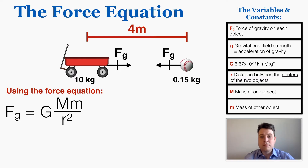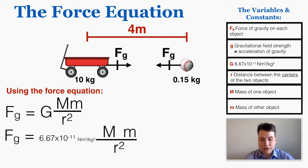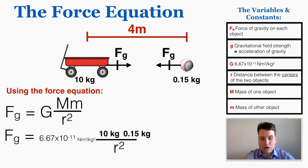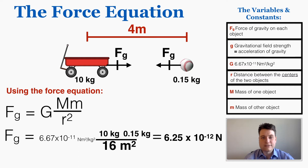Capital G is the gravitational constant, always equal to 6.67 times 10 to the negative 11th Newton meters squared over kilograms squared — constant everywhere in the universe. Big M and little m are just the two masses; the order doesn't matter. Plugging in 10 kg, 0.15 kg, and r = 4 m (so r squared = 16 m squared), the force of gravity between these two objects is 6.25 times 10 to the negative 12 Newtons — about six trillionths of a Newton, which is why we don't normally observe it.